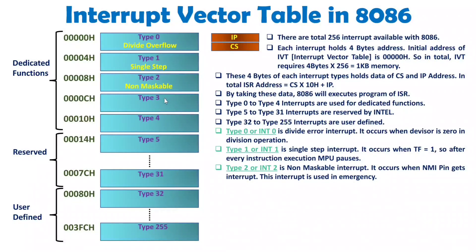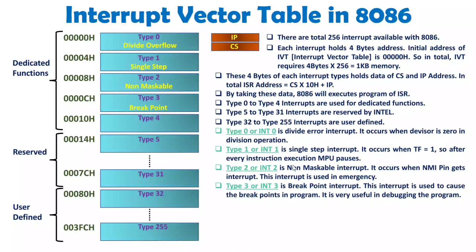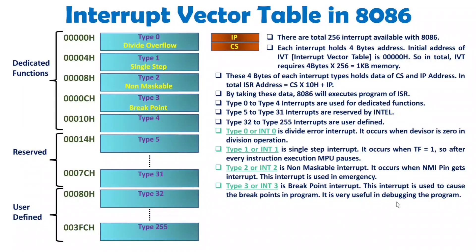Type 3 is the breakpoint interrupt. We use this breakpoint interrupt to set breaks in a program. The reason is, if you have a very long program and execute it all at once, it may be difficult to identify logical issues. If you break the program down into sections, and errors exist in different sections, the breakpoint helps identify them. It is very useful in debugging programs.